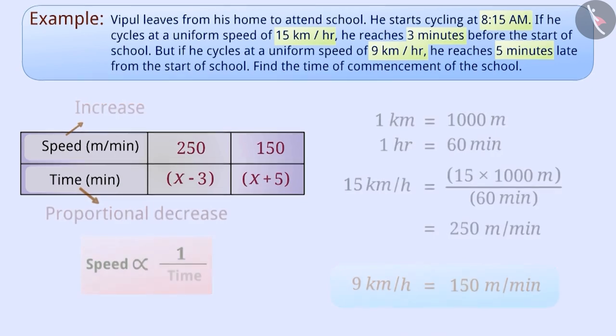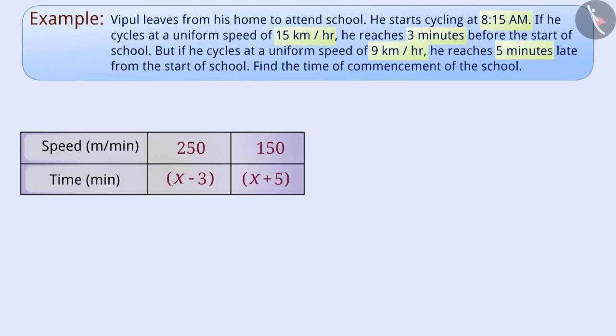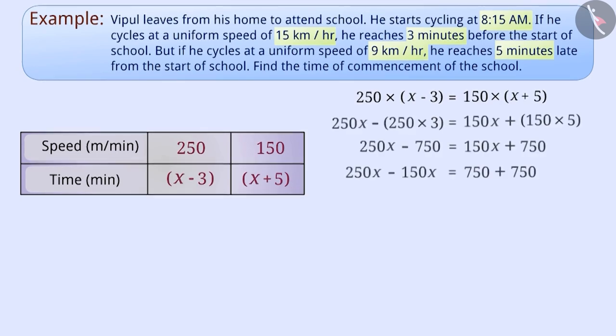In case of inverse proportion, 250 × (x - 3) = 150 × (x + 5). On solving this, we will get 100x = 1500. That is, x = 1500 ÷ 100 = 15 minutes.